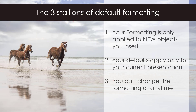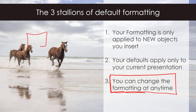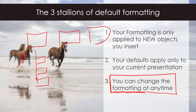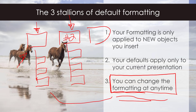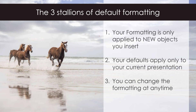Third: you can change your default formatting at any time. If your presentation has multiple sections with different design styles, set the default formatting that matches the first section, then as you move to section two — if it has different formatting — reset new default lines, shapes, and text boxes for that section. Leverage this to quickly format the different aspects of your presentation.